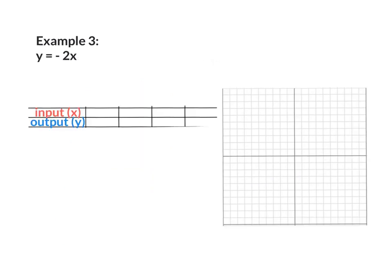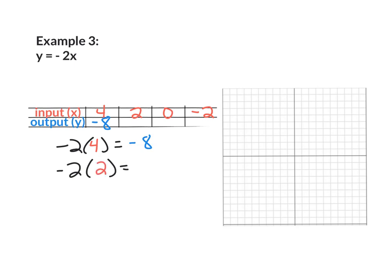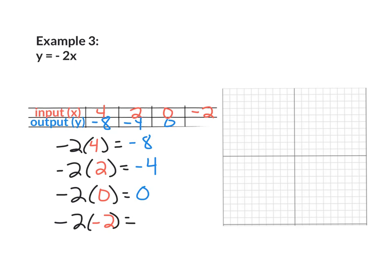Example 3: y equals negative 2x. The function table is horizontal, but we can work with that. I'll show my work below. I'm going to pick the points 4, 2, 0, and negative 2 — when points are not given, you can choose your own. Plugging in: negative 2 times 4 gives negative 8. Negative 2 times 2 gives negative 4. Negative 2 times 0 gives 0. Negative 2 times negative 2 gives positive 4.